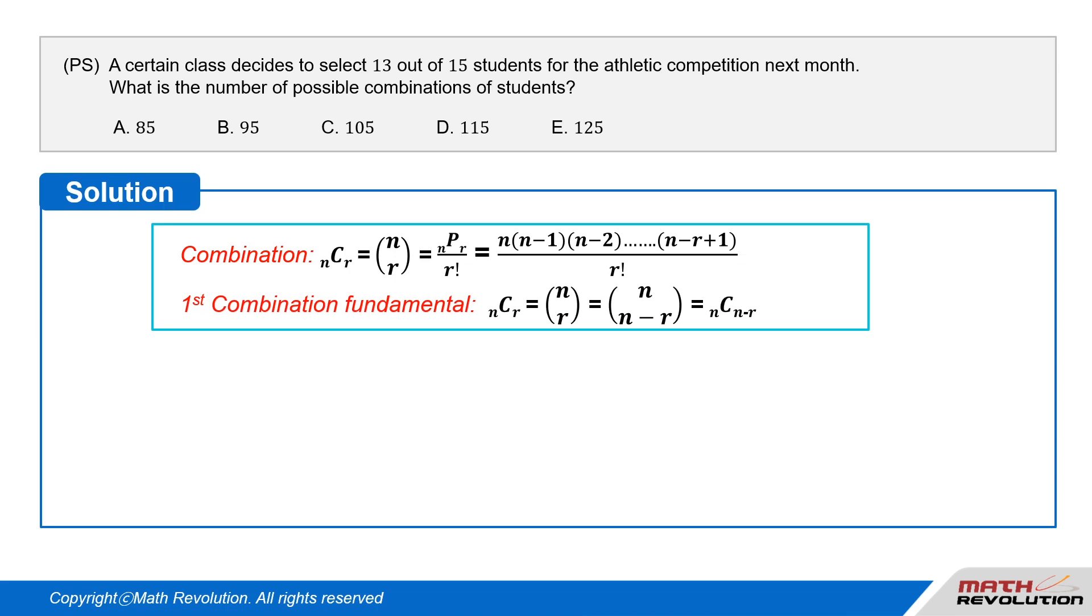We can apply the first fundamental property from above to simplify the problem: n choose r equals n choose n minus r.